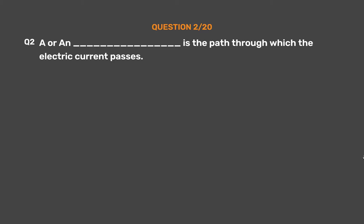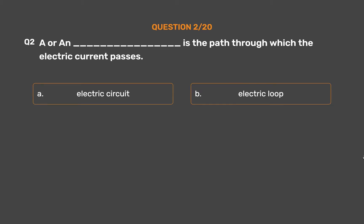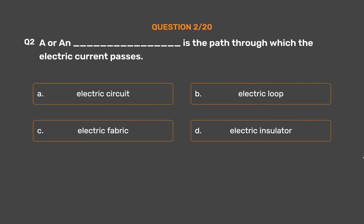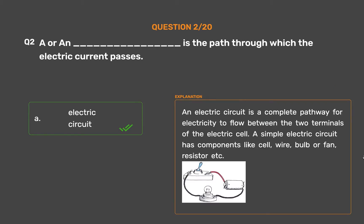Question number 2. A blank is the path through which the electric current passes. Option A: Electric circuit. Option B: Electric loop. Option C: Electric fabric. Option D: Electric insulator. The correct answer is Option A, Electric circuit. An electric circuit is a complete pathway for electricity to flow between the two terminals of the electric cell. A simple electric circuit has components like cell, wire, bulb or fan, resistor, etc.